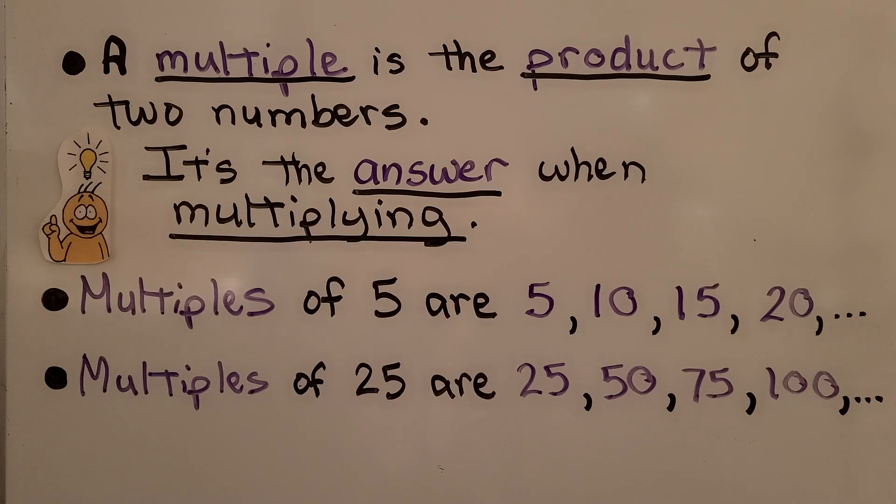So remember, a multiple is the product of two numbers. It's the answer when multiplying. So multiples of 5 are 5, 10, 15, 20, and so on. Multiples of 25 are 25, 50, 75, 100.